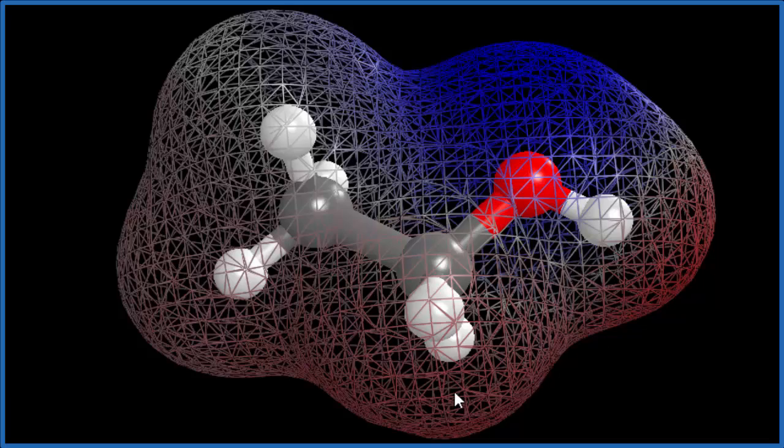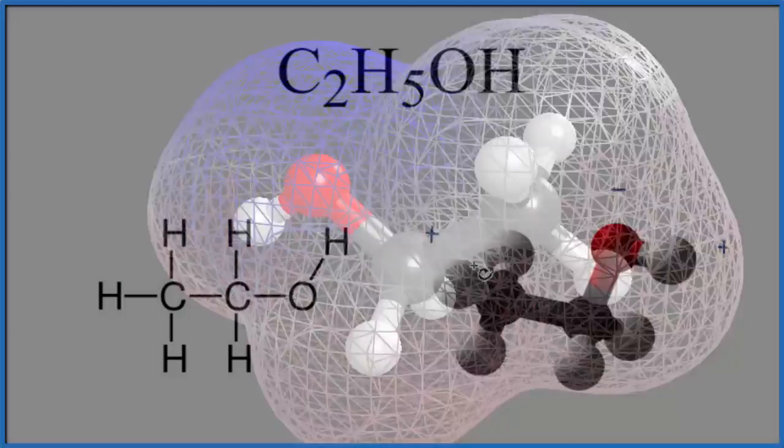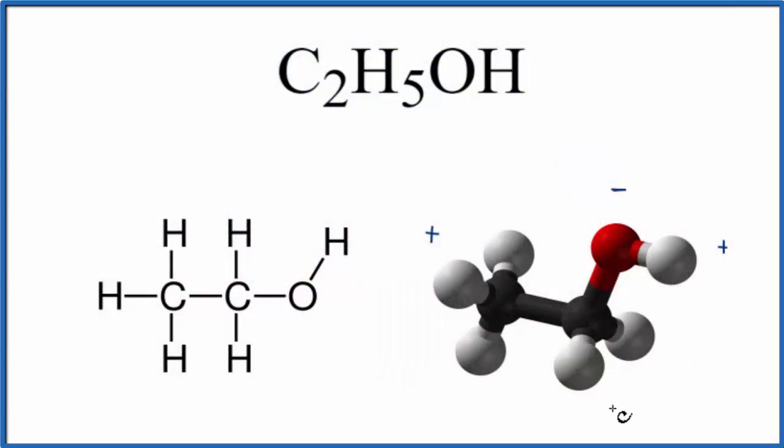So ethanol, C2H5OH, that's definitely going to be a polar molecule. So we saw in our model there that this was the more positive, and then this here was fairly neutral. So since we have this polar molecule, this will dissolve in water, which is another polar molecule.